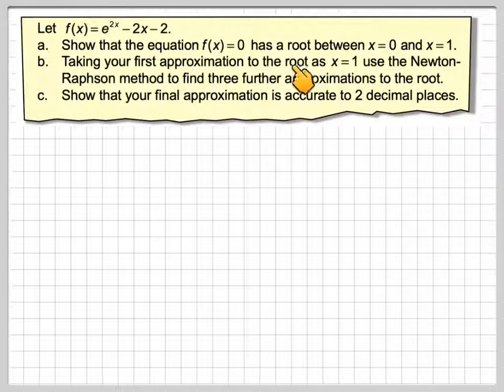Taking your first approximation to the root as x is equal to 1, use the Newton-Raphson method to find three further approximations to the root. Show that your final approximation is accurate to two decimal places.